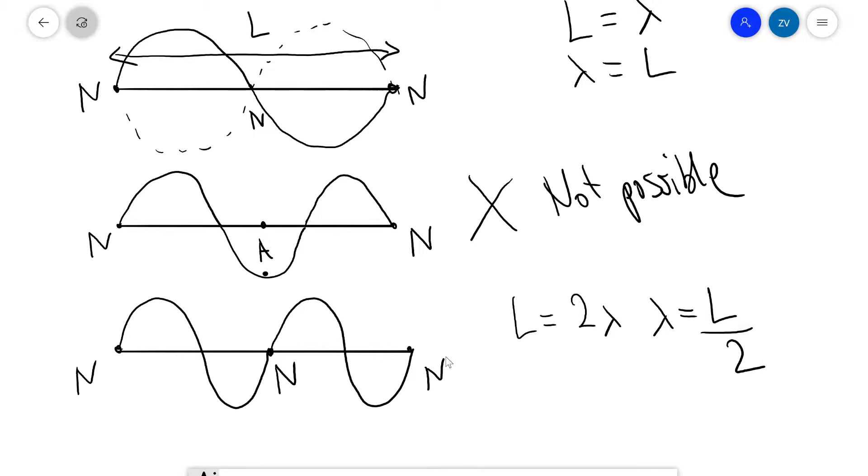Wait, hang on a minute. L was equal to the wavelength was possible. This one here was not possible, and lambda equals L over 2 is also possible.